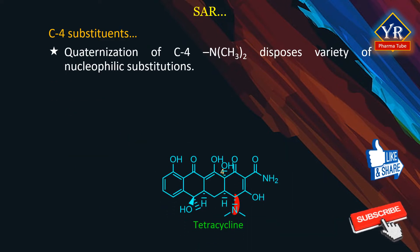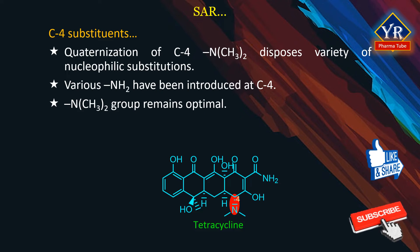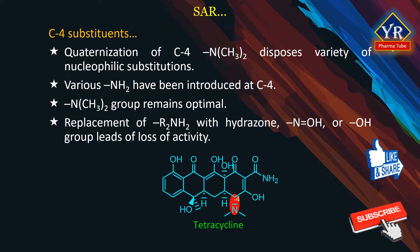Quaternization of the C4 dimethylamino group disposes the tetracycline to a variety of nucleophilic substitutions. For example, various amines have been introduced at the C4 position. The trend indicates that small C4 amino moieties are preferred and the dimethylamino group remains optimal, although other variations such as ethyl-methylamino and diethylamino substituents are active. In addition to steric size, a key feature operative with C4 substituents is appropriate basicity. Replacement of the dialkylamine group with hydrazone, oxime, or hydroxyl group leads to pronounced loss of activity, probably due to increased heteroatom basicity. Tetracyclines with quaternary C4 amines are also susceptible to intramolecular ketol formation or elimination.